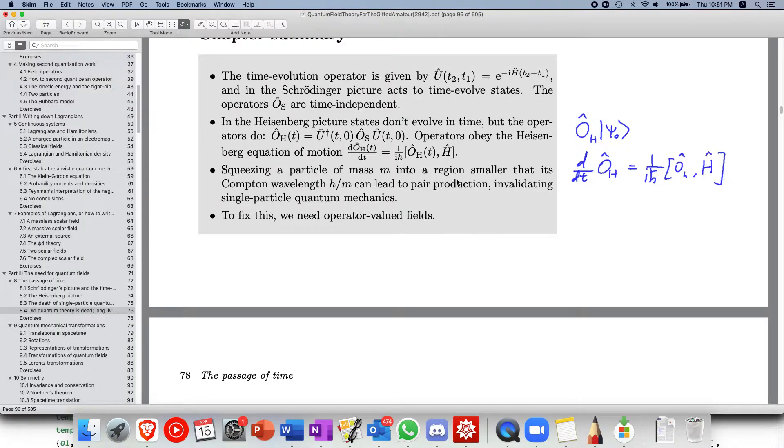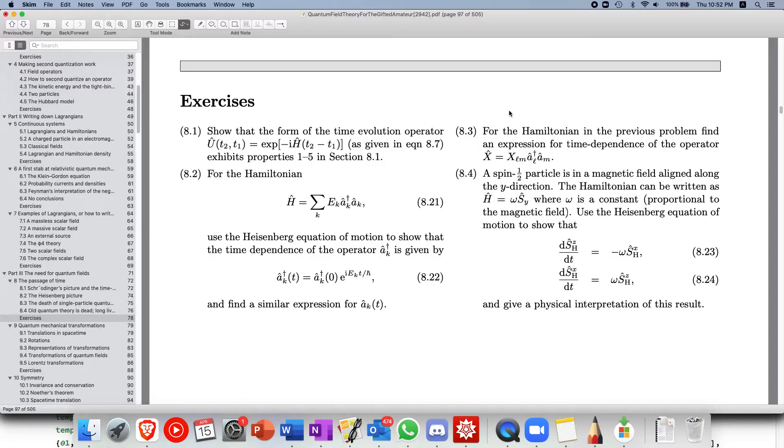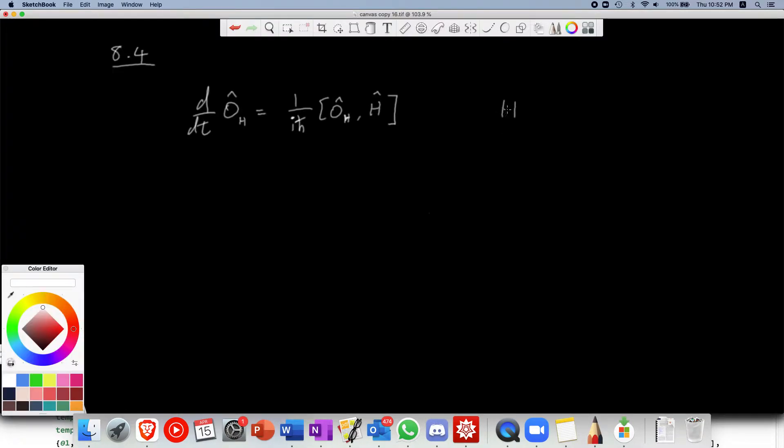So how do we apply in this scenario? So we have our Hamiltonian. So let's first write down, so we are doing question 8.4. So write down Hamiltonian's equation of motion which is the time evolution of an operator is given by the commutator of that operator with the Hamiltonian. So in this case, in this problem, we are given the Hamiltonian is equals to omega s y.